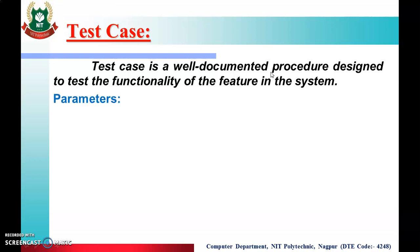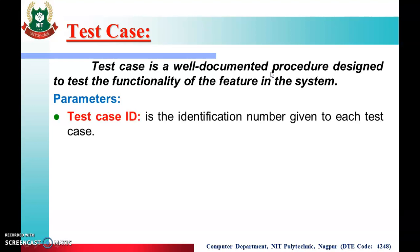Now, for test case design, we have some parameters. The first one is Test Case ID. There are n number of test cases written for testing the software, so every test case has one identification number given to each test case.